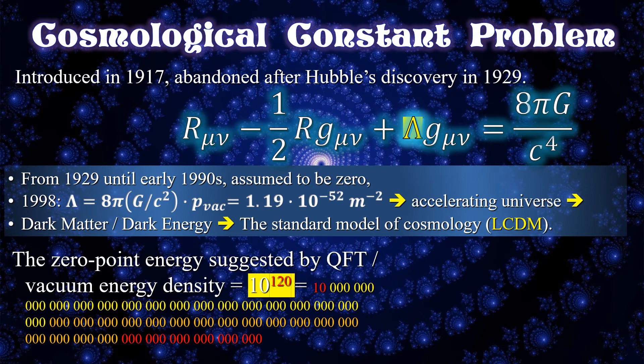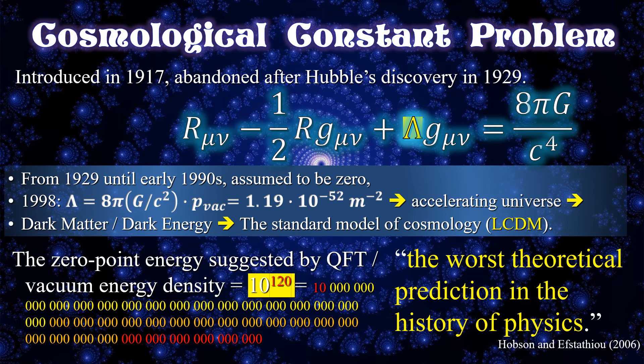This is known as the problem of smallness. Moreover, being so small, it just happens to have exactly the value that makes its density similar to the average matter density, which is called the coincidence problem. Many solutions have been suggested, but because the discrepancy is so huge none of the speculations came ever close to solving the puzzle, which indicates that there is something substantially wrong in our understanding of quantum physical processes. Therefore this problem was described as the worst theoretical prediction in the history of physics.